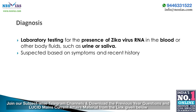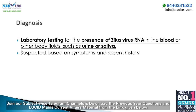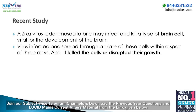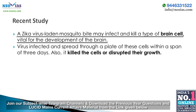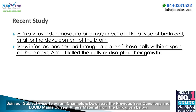Regarding diagnosis: Zika virus infection can only be confirmed by laboratory testing for the presence of Zika virus RNA in the blood or other body fluids such as urine or saliva. Infection may be suspected based on symptoms and recent travel history to an area where Zika is known to be present. A recent study states that in lab-grown human brain cells, Zika virus may infect and kill a type of brain cell vital for brain development. The virus infected and spread through these cells within three days, killing or disrupting their growth.